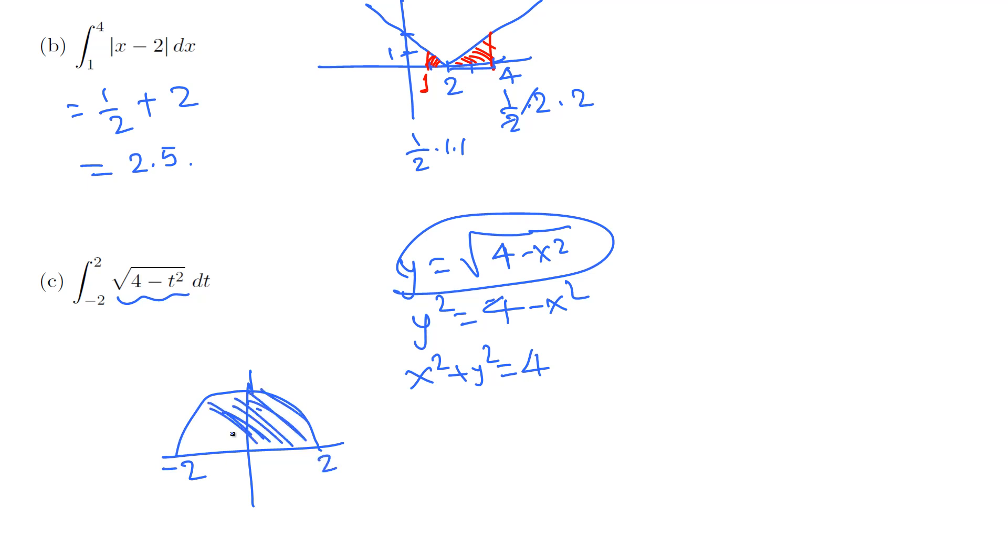We have a semicircle with radius 2. The area of a circle is π times radius squared. In this case, we only have half, so we multiply by half. The radius is 2, so it's 2 squared.